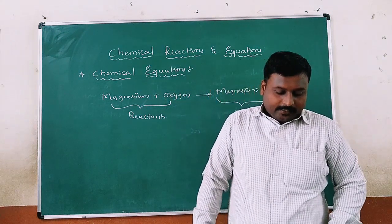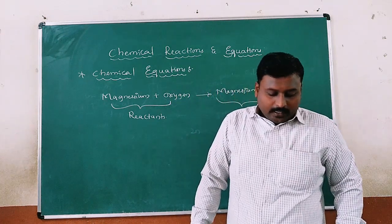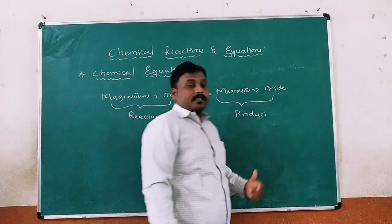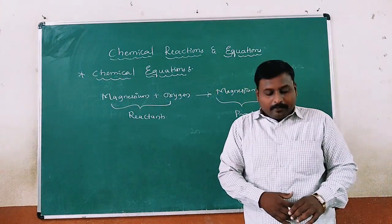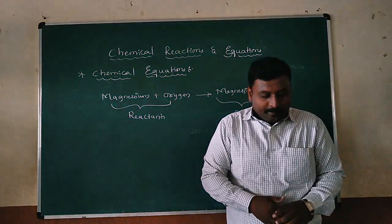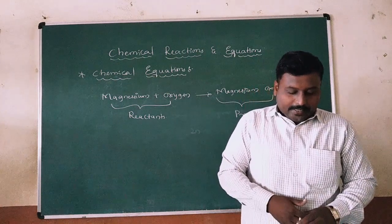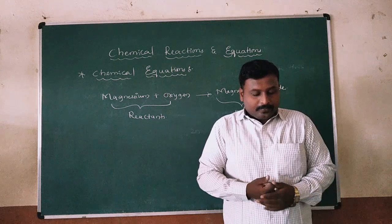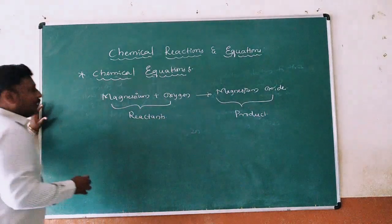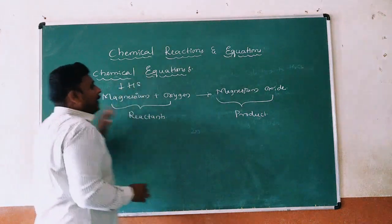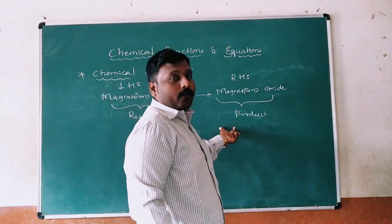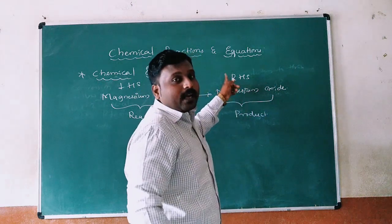Magnesium and oxygen are the reactants. The new substance magnesium oxide formed during the reaction is the product. A word equation shows the change of reactants to products through an arrow placed between them. The reactants are written on the left-hand side with a plus sign between them. Similarly, products are written on the right-hand side with a plus sign between them. The arrow points towards the product and shows the direction of the reaction.